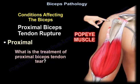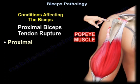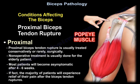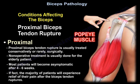What is the treatment of the biceps tendon tear? The rupture may be treated either conservatively or rarely surgically. Non-operative treatment is usually done for the elderly. Most patients will become asymptomatic after four to six weeks. In fact, the majority of patients will experience relief of the shoulder pain after the biceps ruptures.